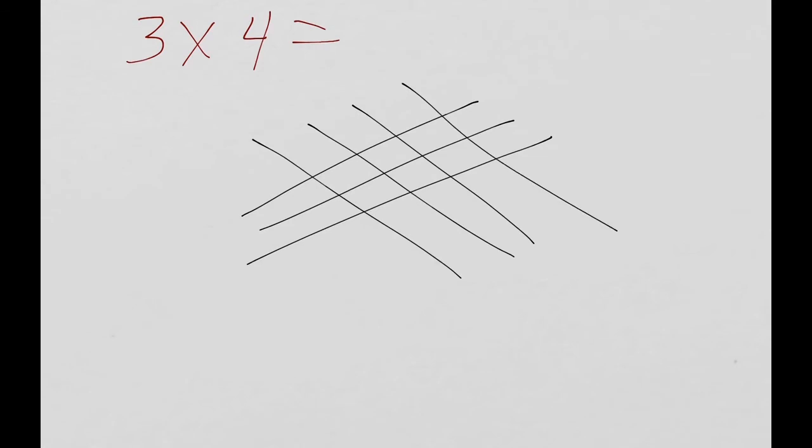Then you'd go to the number 4 and you'd make 4 lines. And you'd add up the number of points where those lines cross. So 1, 2, 3, 4, 5, 6, 7, 8, 9, 10, 11, 12. And you would get your answer, which is simply 12.